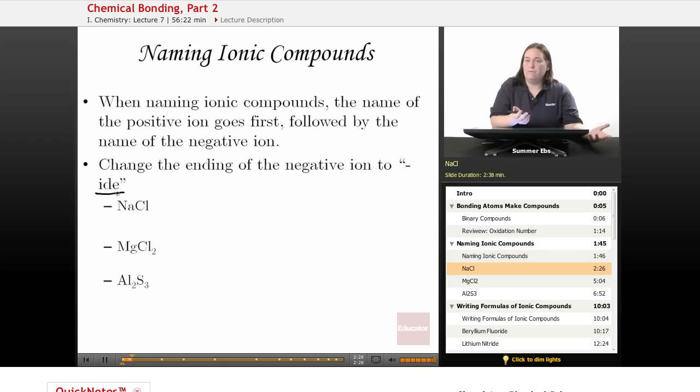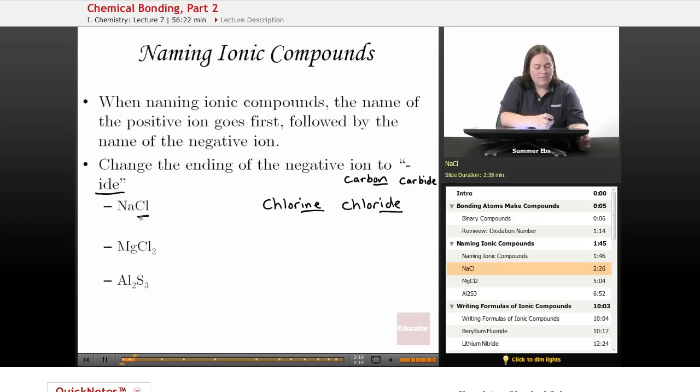The negative ion goes second, and you change the ending of the negative ion to -ide. If your negative ion is chlorine, the ending changes to chloride. For carbon, it becomes carbide. Anytime you see -ide, you know we're naming a compound—in this case, an ionic compound.